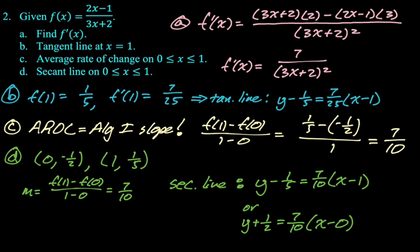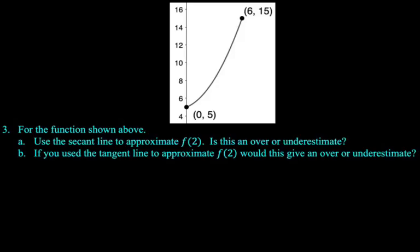And let's take a look at question number 3, which is the last question in this problem set. I'm trying to make all of my videos for these under 10 minutes, which maybe I'm going fast, slow the video down, whatever. That's my goal. And I don't know how many problem sets there will be, but we're going to go for it. Alright, for the function shown above, use a secant line to approximate f of 2. Is this an over or under estimate?